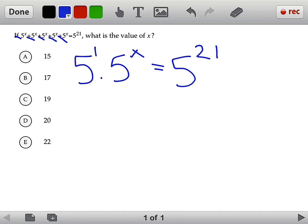So if you try to simplify the left-hand side, we have to remember a rule. When you have the bases equal, you can actually sum the powers. So 5 to the power of 1 plus x is equal to 5 to the power of 21.